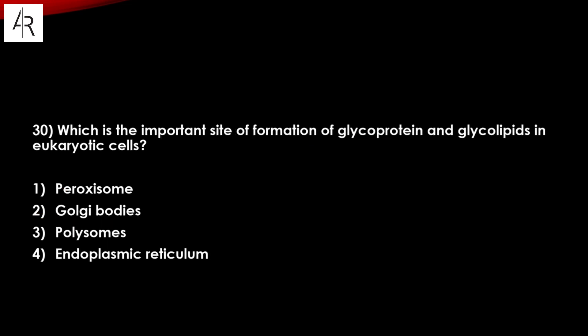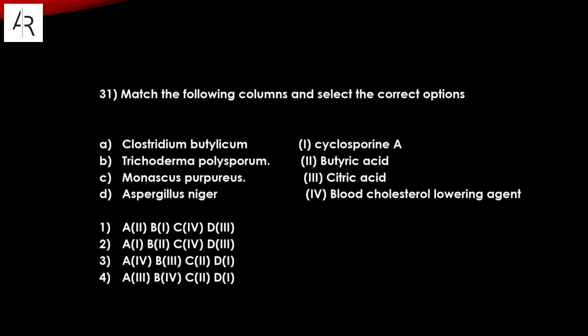Question number thirty: which is the important site for the formation of glycoproteins and glycolipids in eukaryotic cells? Peroxisome? No. Option number two — the Golgi body — is the correct answer, as it is the site for glycoprotein and glycolipid formation.